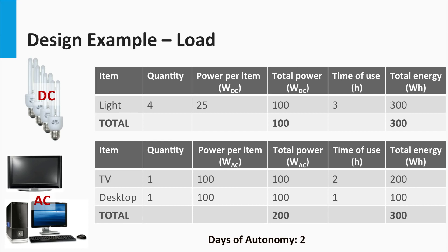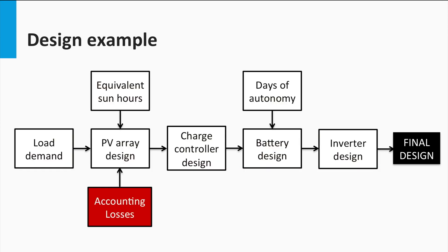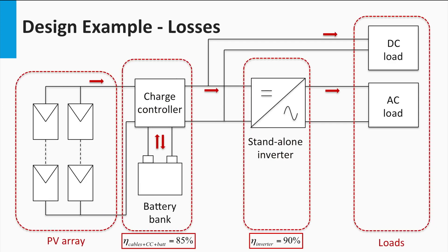It is required that the system enjoys a total autonomy of two days — that is, a fully charged battery should be able to feed the load when there are two days without solar power. Now we must account for the various losses in the system. In doing so, we want to estimate the minimum power that the PV array is expected to deliver. The inverter is supposed to have an efficiency of 90%, while the combined efficiency of the charge controller, battery, and cables is 85%.